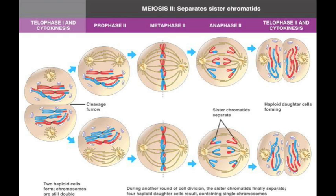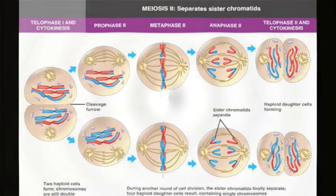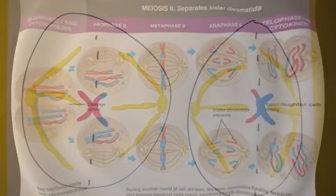During prophase II, chromosomes with two chromatids become visible as they condense, and the nuclear envelope and nucleoli disappear and the spindle is forming.